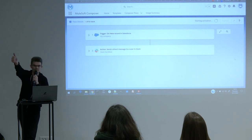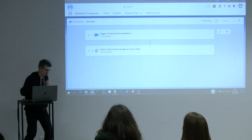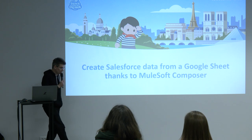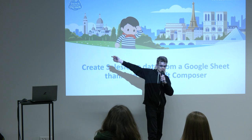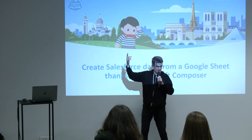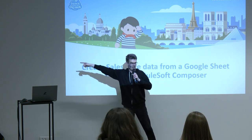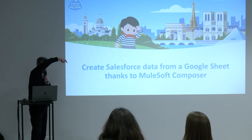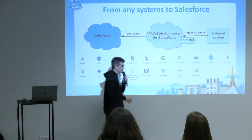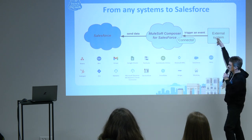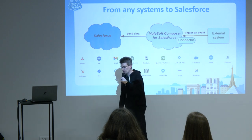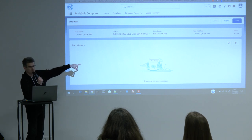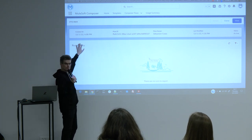That was demonstration number one. Do you want number two? Let's do demonstration number two. This time, the goal is to take data from a Google Sheet and send it to Salesforce. And why not then detect the new data in Salesforce and send it to Slack — reusing the previous flow! So the chain is: external Google Sheet → MuleSoft Composer → Salesforce → (via the first flow) → Slack. My first flow is now activated.